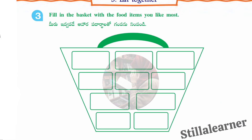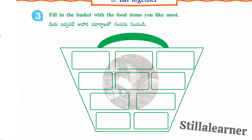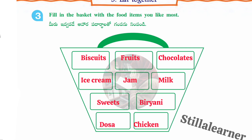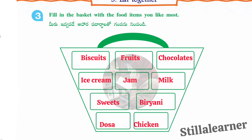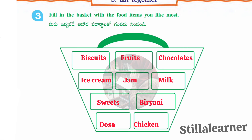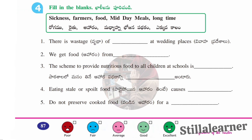The third section asks you to fill in the basket with food items you like most. Examples: biscuits, fruits, chocolates, ice cream, jam, milk, sweets, biryani, dosa, and chicken.